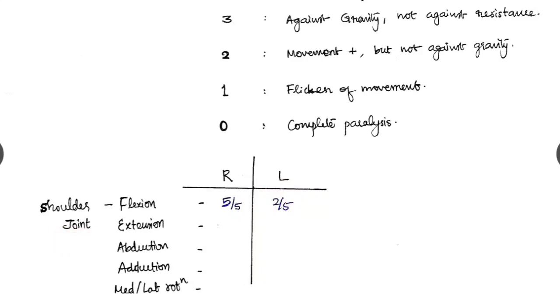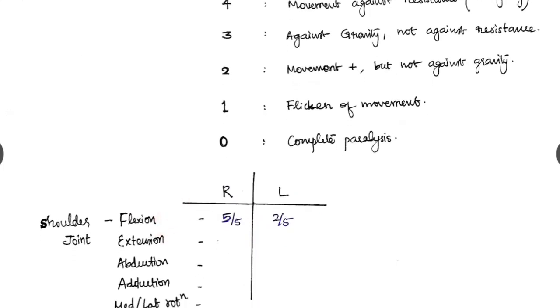For example, shoulder joint: flexion, extension, abduction, adduction, medial and lateral rotation, we have to write down separately and grade it down like this. And the corresponding muscles of these actions has to be learned.